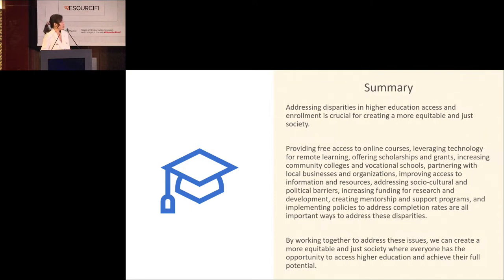Providing free access to online courses, leveraging technology for remote learning, offering scholarships and grants, increasing community colleges and vocational skills, partnering with local businesses and organizations, improving access to information and resources, addressing sociocultural and political barriers, increasing funding for research and development, creating mentorship and support programs, and implementing policies to address completion rates — all are important ways to address these challenges. By working together, we can create a more equitable society where everyone has the opportunity to access higher education and achieve their full potential. Thank you so much.